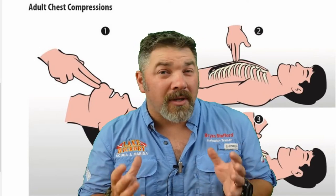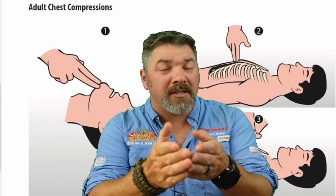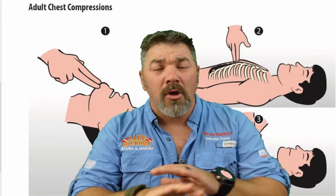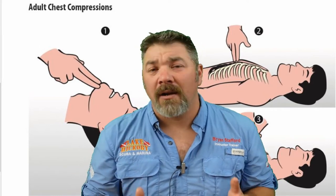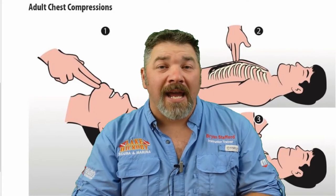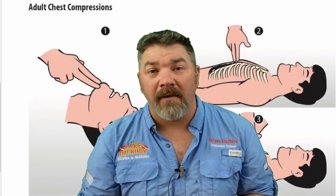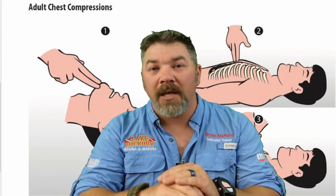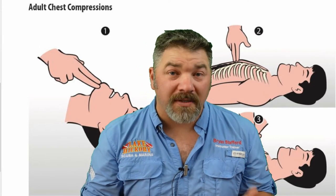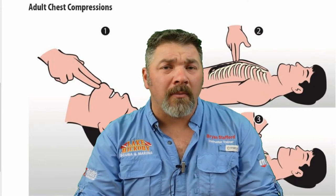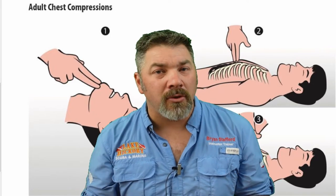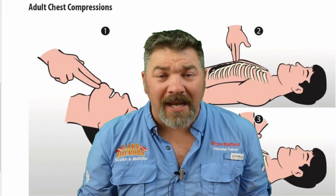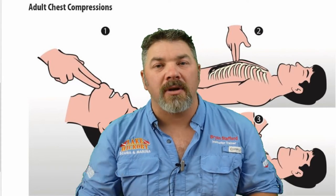Once you determine whether this is an infant, child, or adult, you can use the proper technique. With an infant we typically use two thumbs, with a child you can use one hand, and with an adult you use both hands. Positioning is very important — you need to be directly over the patient and directly above the heart. We typically say directly under the armpits along the center line of the body as a great starting point. When you perform a compression, push down approximately two inches and allow the chest plenty of recoil before the next compression.